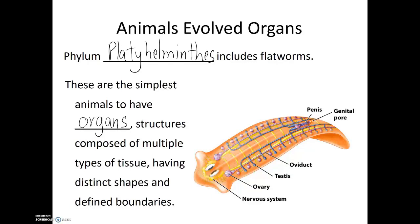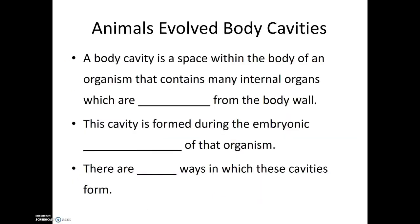Although flatworms do have organs, one thing that they're lacking that more complex animals have is something known as a body cavity. A body cavity is a space within the body of an organism that contains many internal organs, which are distinct from the body wall. This cavity is formed during the embryonic development of that organism.